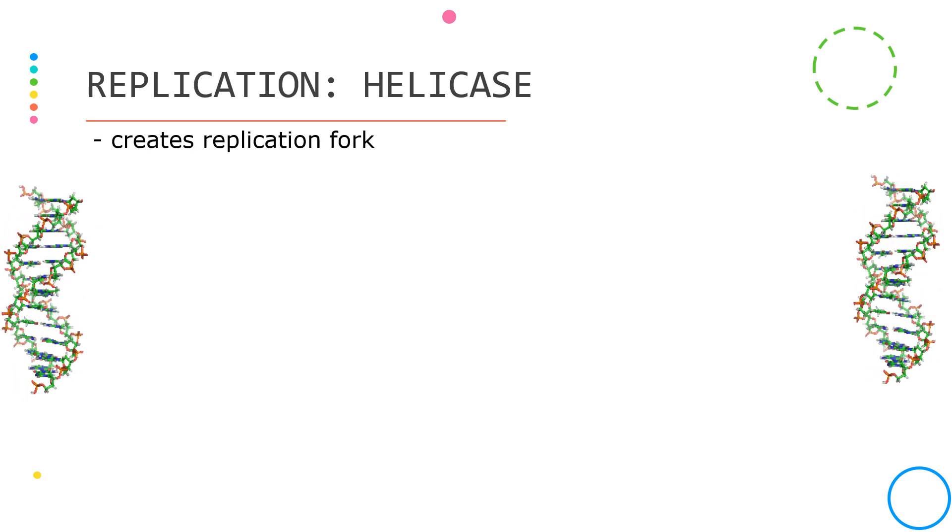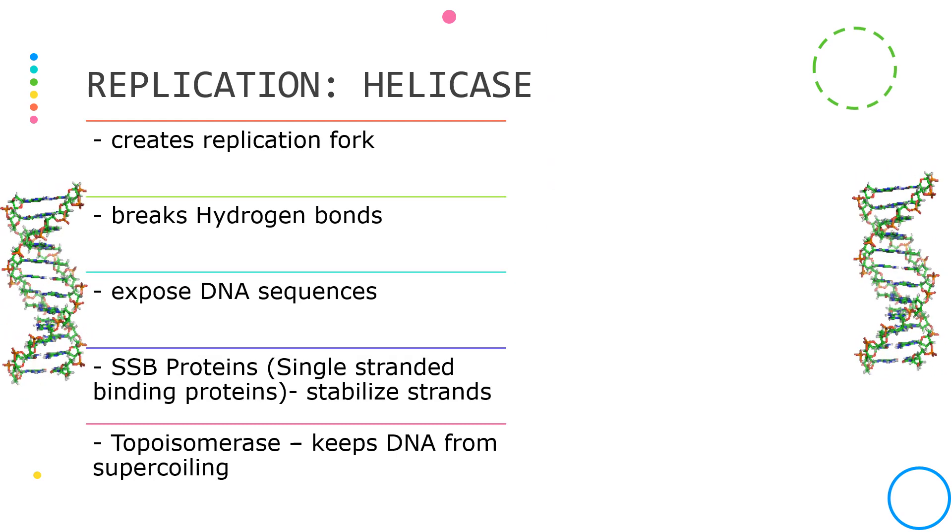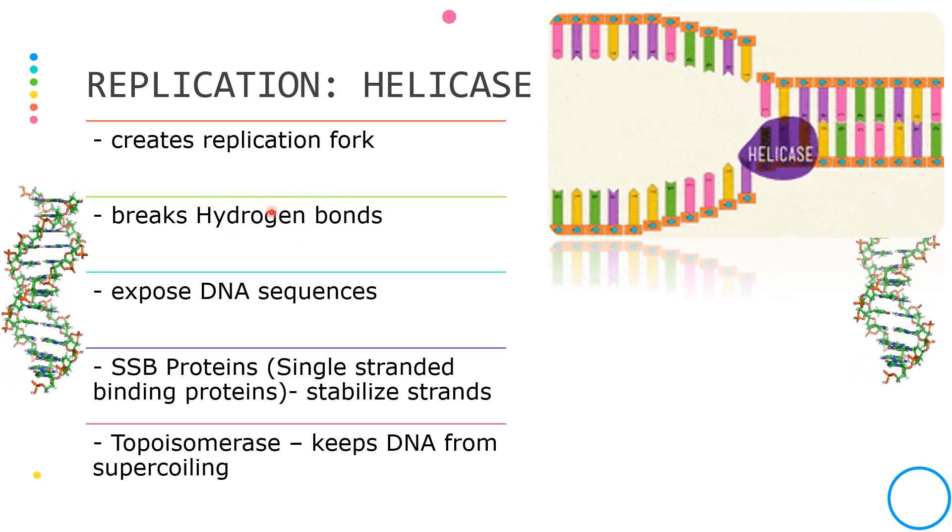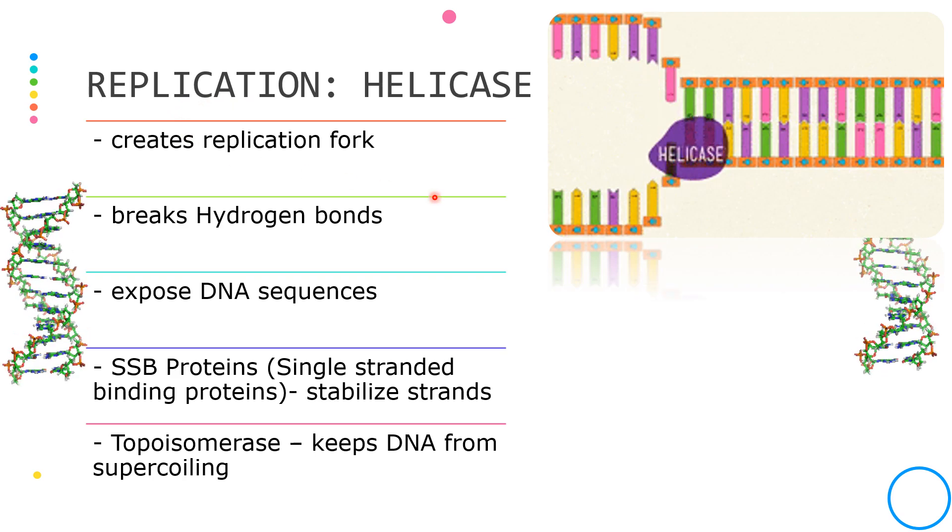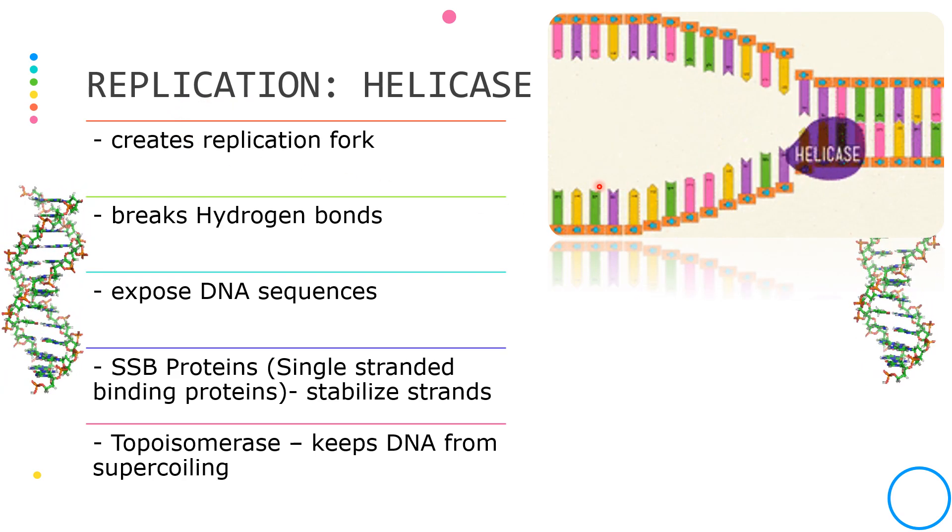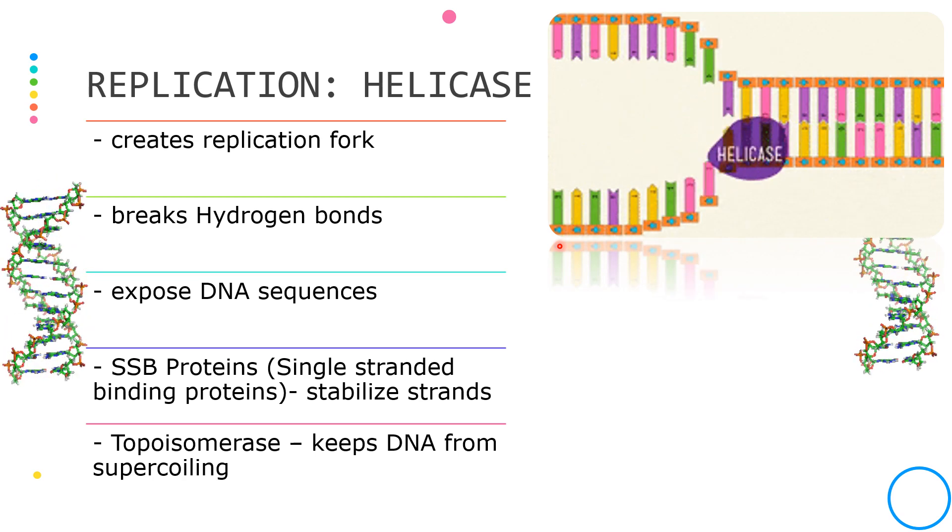The first enzyme, which is the helicase, unwinds and separates the strands by breaking the hydrogen bonds that hold the DNA base together. This creates the replication fork, exposing the sequences of DNA base pairs where the succeeding enzymes will act.